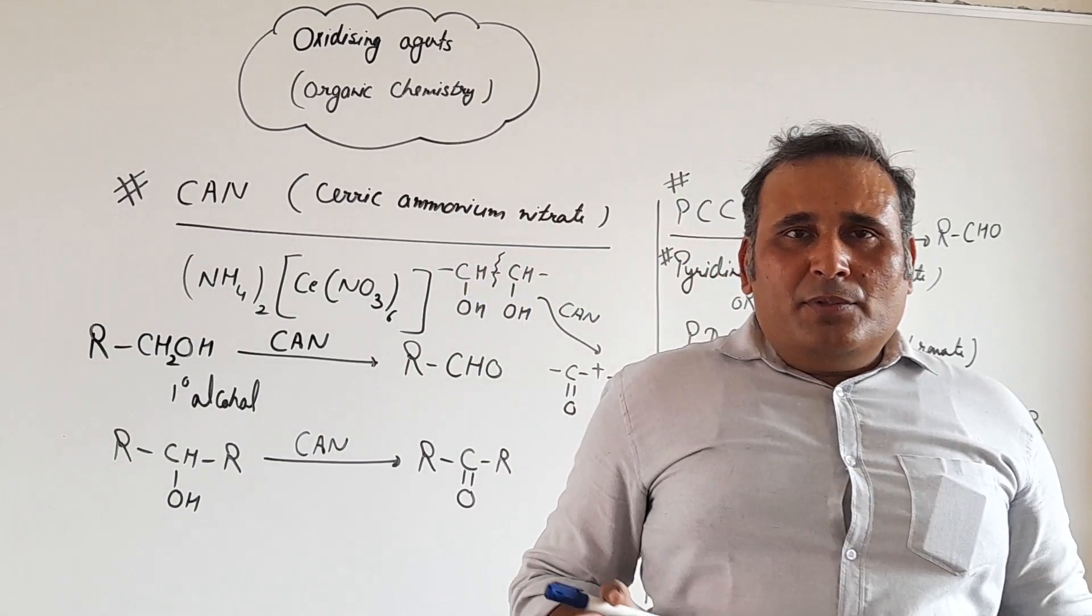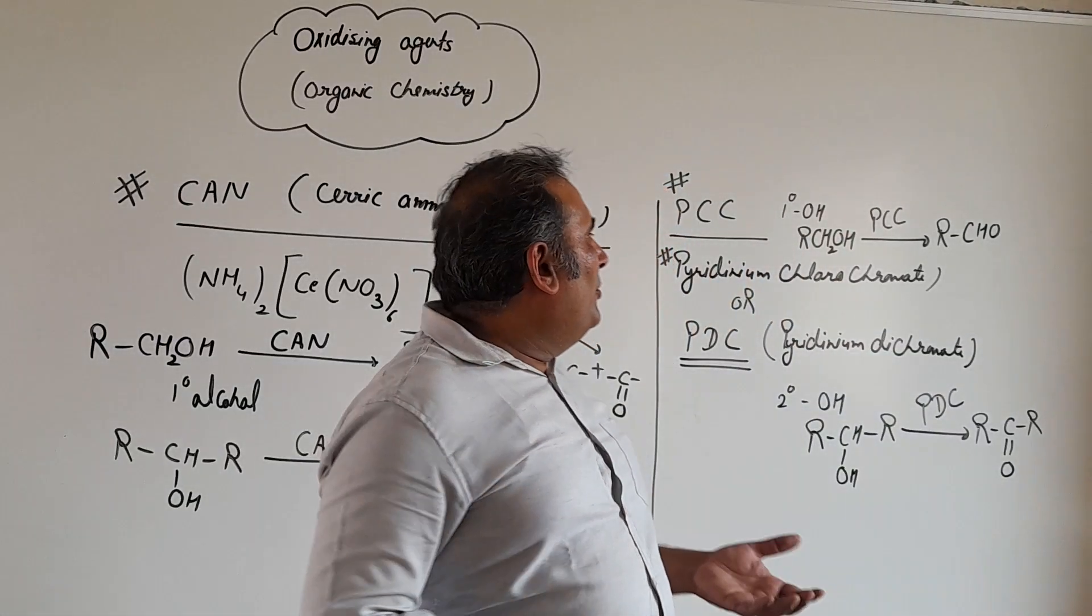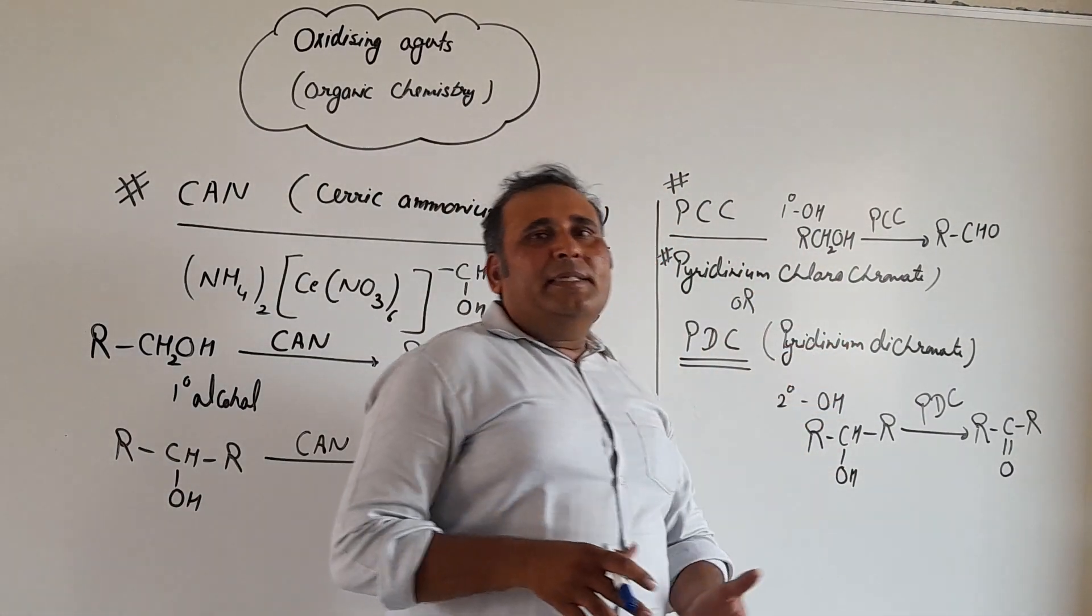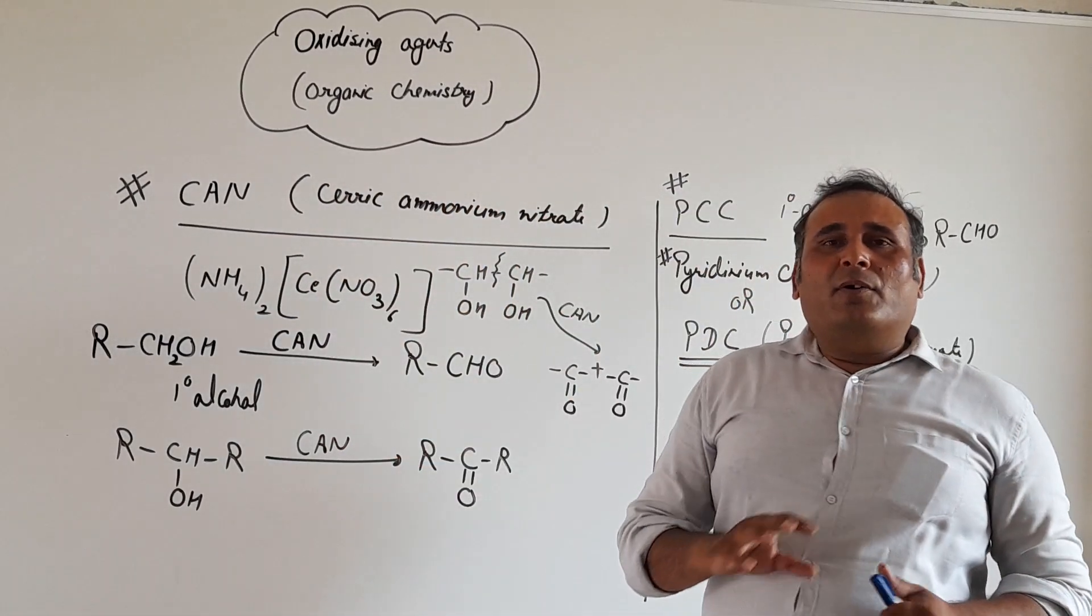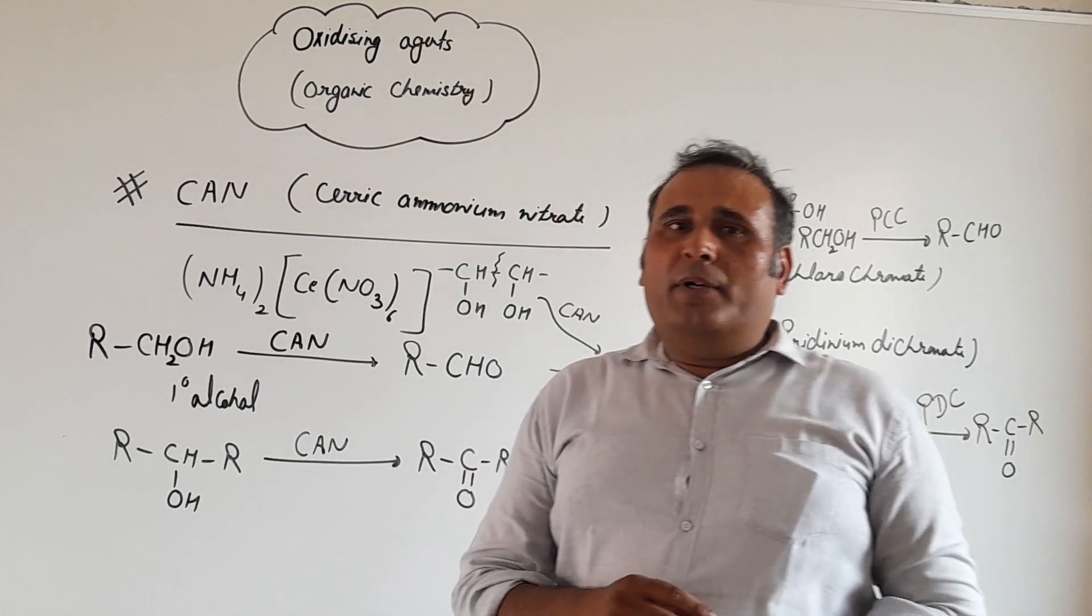So we can say if we want to convert 1 degree alcohol into aldehyde, then we can't use acidic KMnO4 and of course we have to use either PCC or PDC or we can use Ceric ammonium nitrate. Ceric ammonium nitrate also does not oxidize double bond.